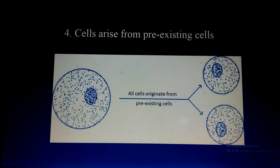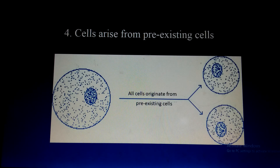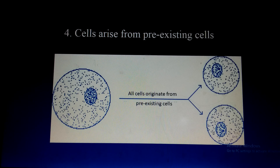Now, cells arise from pre-existing cells. Each cell gives its copy by replication through cell division. The basic type of cell division responsible for the growth and development of living organisms is mitosis. During mitosis, an exact copy of the cell is produced. Similarly, in the case of germ cells — sperm, for example — meiosis occurs. So the cell arises from pre-existing cells by the mechanism of cell division.